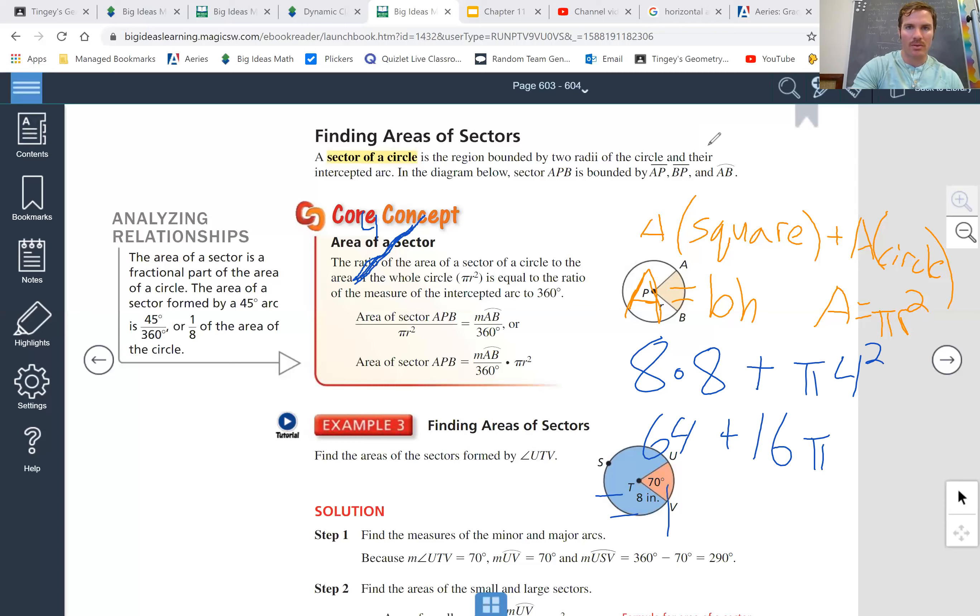And you get 114.265... and it says round to the nearest square meter, so it'd be 114 square meters. This is the area of the field.